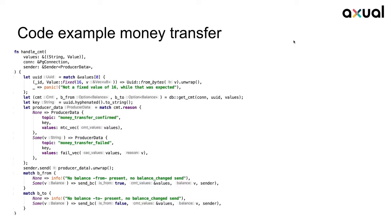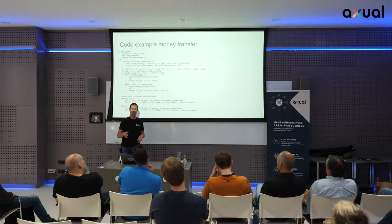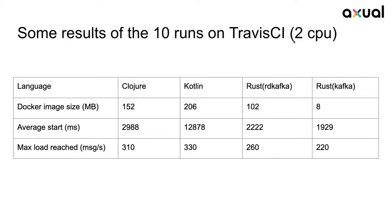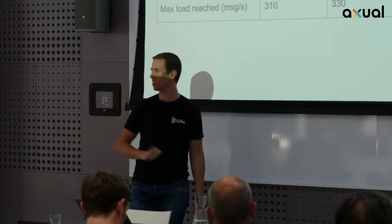There's some Rust code to show. A lot of things in Rust work with match — you can start something, check whether it went fine or not, and handle errors. There's also a shorthand where you put a question mark behind an expression, but if it fails then your whole application crashes.